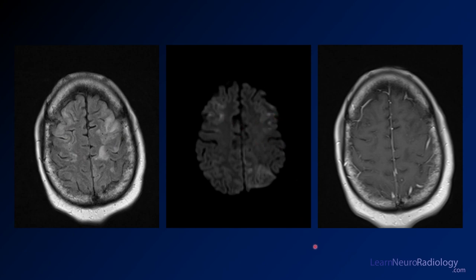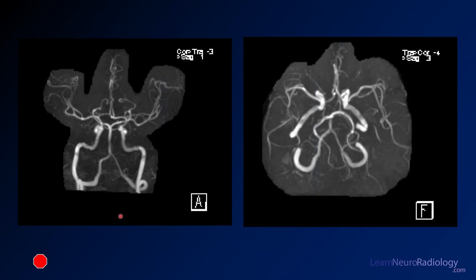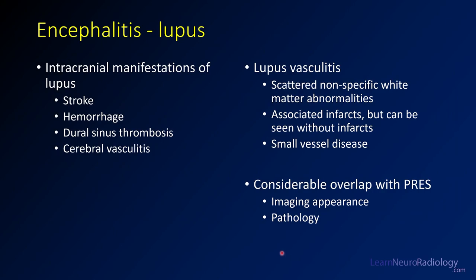More frontally, you see patchy dots of diffusion with not much enhancement at this level. The MRA shows both carotids look pretty good, and the vertebrals look pretty good — not a lot of vascular abnormalities. This is a case of encephalitis caused by lupus. These patients can get stroke, hemorrhages, dural sinus thrombosis, and cerebral vasculitis. Here there's a mixed picture with nonspecific white matter abnormalities and infarcts, particularly in the posterior fossa. This is small vessel disease, and you may not see much on an MRA — which was pretty normal here because the affected vessels are very small.